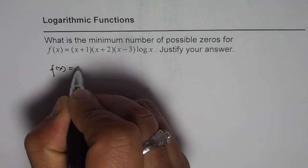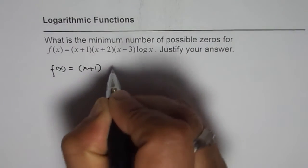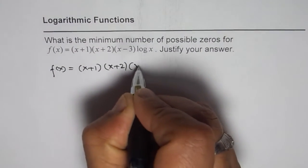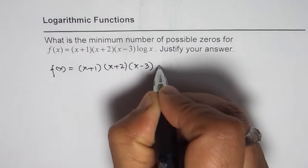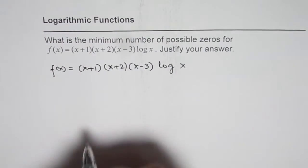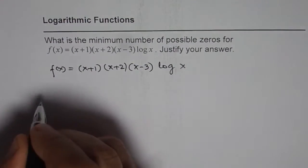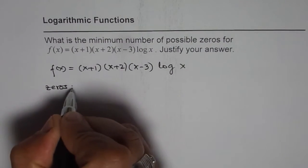We are given f(x) = (x+1)(x+2)(x-3)log x, right? Let's find out the zeros first. So, where are the zeros for this particular function?